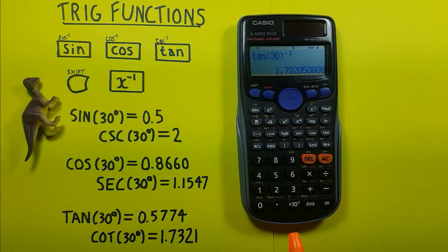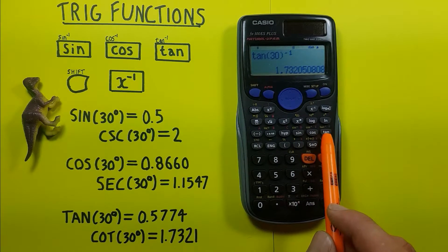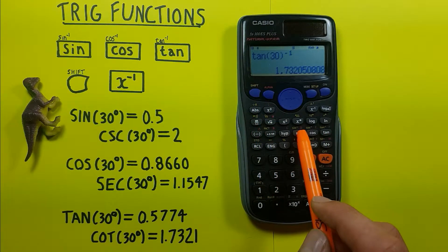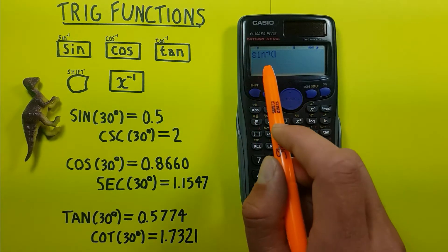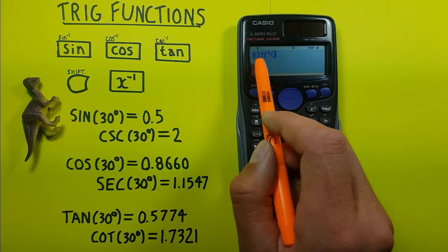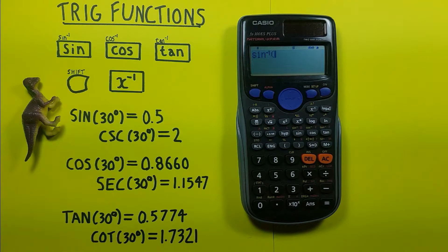We can also calculate arc sine, arc cos, and arc tan with this calculator. To do this we press shift and then the sine, cos, or tan, so that we see we get this sine to the power of minus 1 here. Remember that's different than having the inverse or minus 1 at the end of it, which would give us the cosecant.